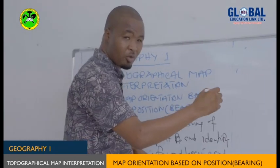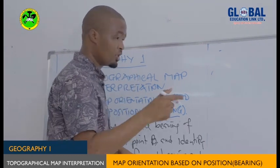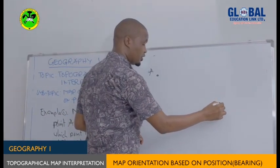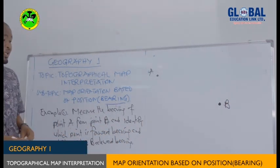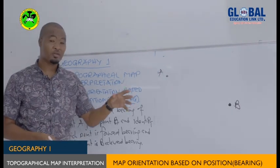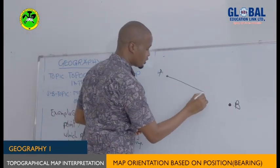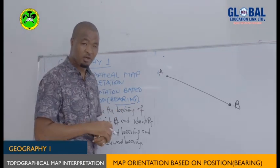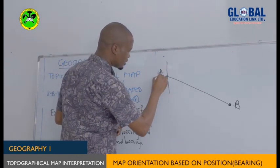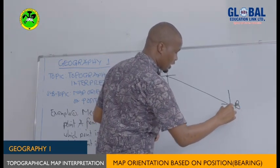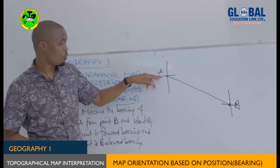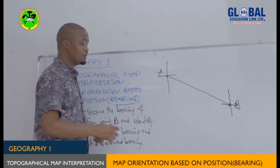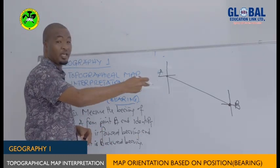The second procedure is to join the two points A and B using a straight line. The third procedure is to draw the four cardinal points at each point — at point A and at point B. Make sure the cardinal points are drawn perpendicular to each point. Thereafter, the last procedure is to measure the angle from A to B.